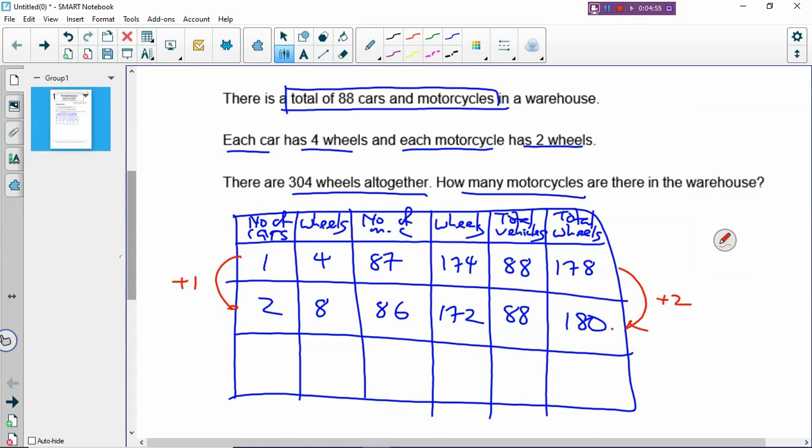So you jump from the second row to the third. I mean you jump from 180 to the correct total number of wheels, which is 304. So how many more wheels are added? You take 304 minus 180. So there is an increase of 124 wheels.